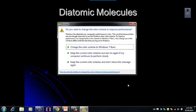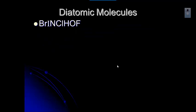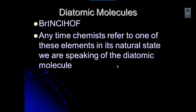Let's go back to diatomic molecules. Remember that some elements, when they are by themselves and not in a compound, always exist in their diatomic form: bromine, iodine, nitrogen, chlorine, hydrogen, oxygen, and fluorine — BrINClHOF, our mnemonic to remember them. Anytime we talk about one of those elements in its natural state, we mean the diatomic molecule, so oxygen is O2, nitrogen is N2, and so on. On the periodic table, it starts at number 7 and is in the shape of a 7, except for hydrogen, which is its own case.